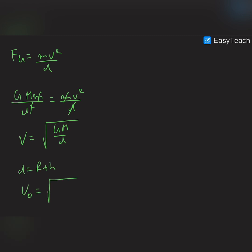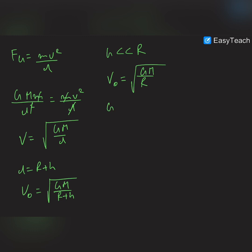So v_orbital equals the square root of GM/(R+h). For orbits very close to Earth's surface, h is much less than R, so we can neglect h. The orbital velocity becomes the square root of GM/R. Since GM equals gR², v_orbital equals the square root of gR, which is approximately 7.92 kilometers per second.